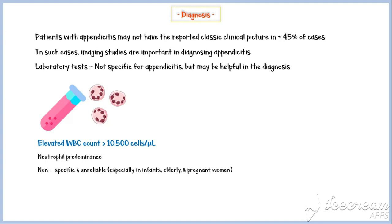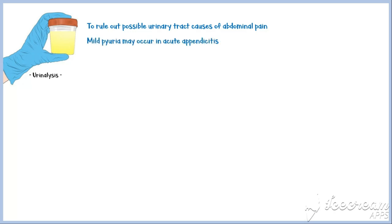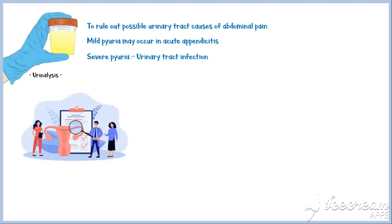In addition, C-reactive protein level is also increased in most patients with appendicitis. Urinalysis should be performed to rule out possible urinary tract causes of abdominal pain. Although mild pyuria may occur in acute appendicitis, severe pyuria indicates a urinary tract infection. For women of childbearing age, a urinary beta-HCG test should be performed to rule out ectopic pregnancy.